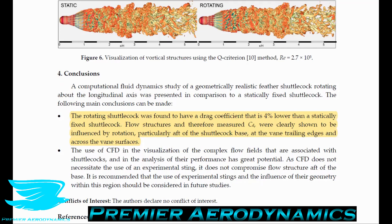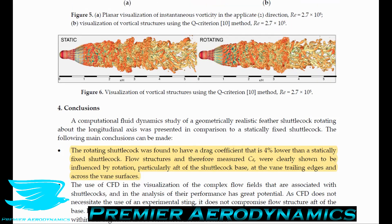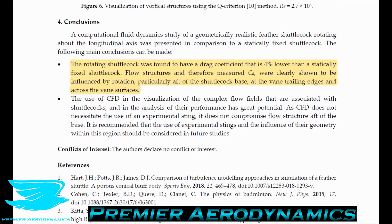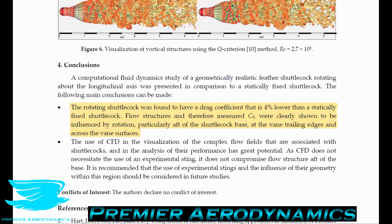In conclusion, the rotating shuttlecock was found to have a drag coefficient 4% lower than the statically fixed shuttlecock. Flow structures and drag coefficient were clearly influenced by rotation, particularly at the aft of the shuttlecock base, the vane trailing edges, and across the vane surfaces. A lot of this seemed to affect the pressure drag, but it all added up to a 4% reduction for rotation. Make sure to like and subscribe, and I'll see you in the next podcast.